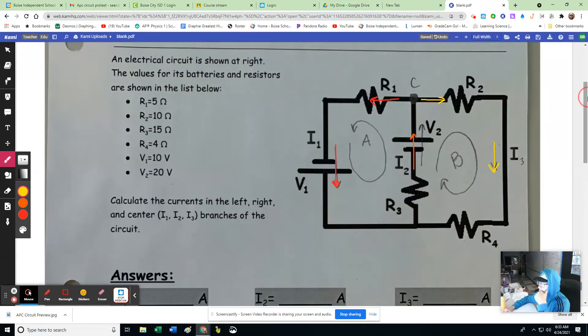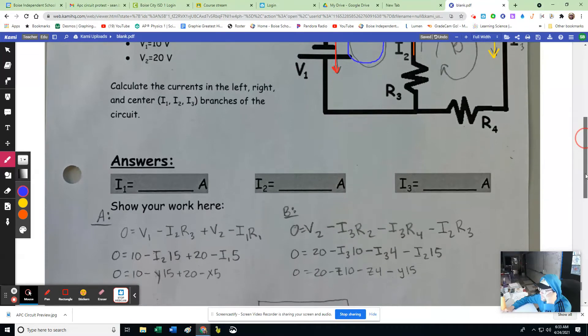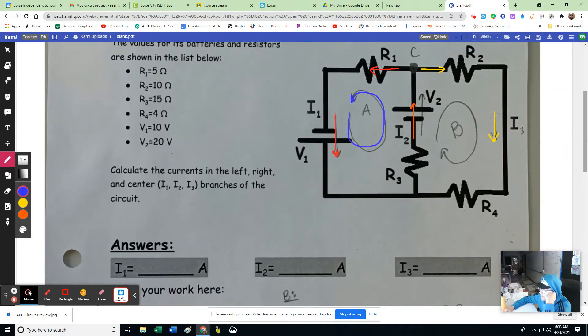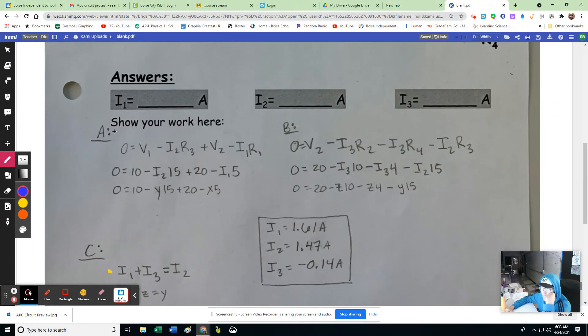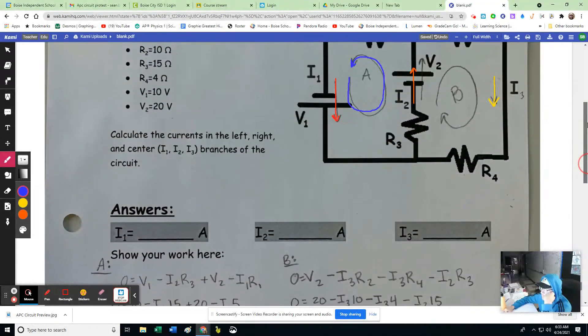So what I'm going to do next is I'm going to do a Kirchhoff's voltage law loop around this pathway. And I'm going to make an equation for that. So that's loop A. So down here I have A. And here's what I'm going to say about that. Maybe we can see it here.